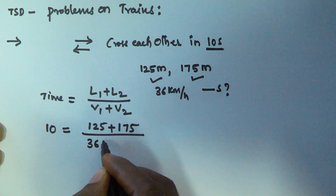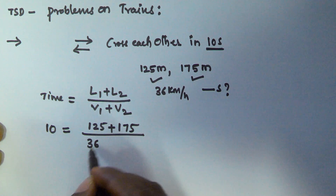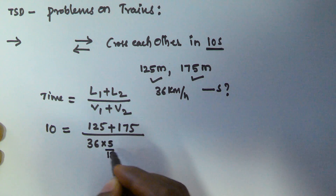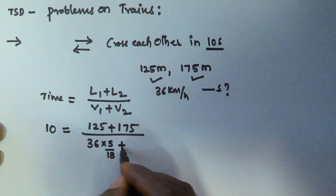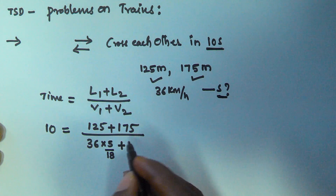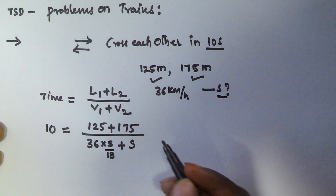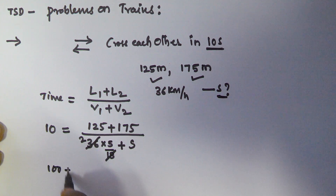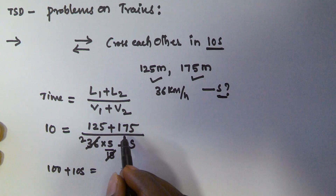These two lengths are in meters and the time is in seconds, so we have to multiply the speed by 5/18 to convert from kilometers per hour into meters per second. The velocity of the first train is 36 km/h, so 36 × (5/18) plus the speed of the second train S. This gives us: (125 + 175) = 10 × (10 + S), which equals 300.